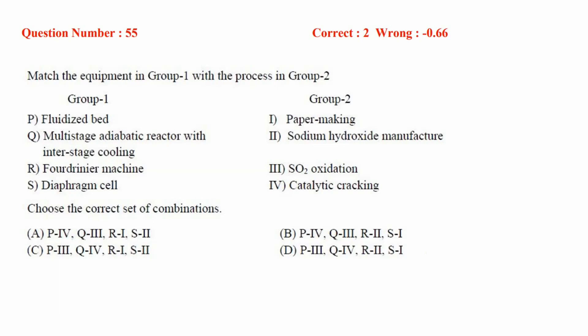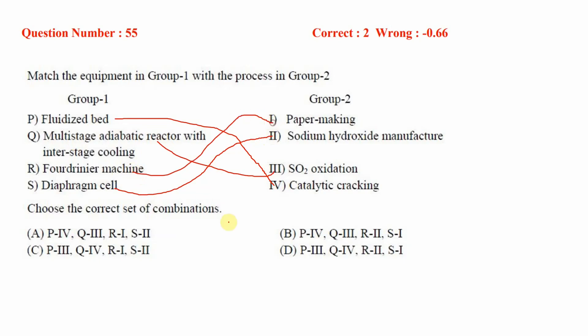For the final matching question: a fluidized bed is used in catalytic cracking, a multi-stage adiabatic reactor with inter-stage cooling is used in SO2 oxidation, a diaphragm cell is used in sodium hydroxide manufacture, and a Fourdrinier machine is used in paper making. The correct option is A. I hope this video was useful — don't forget to like, share, and subscribe, and follow our Instagram page linked in the description.